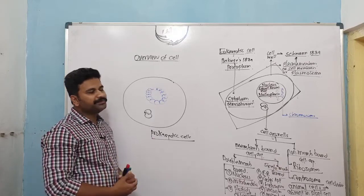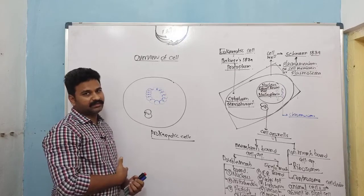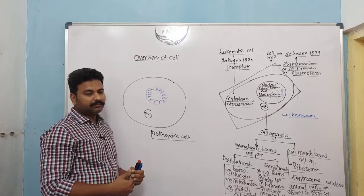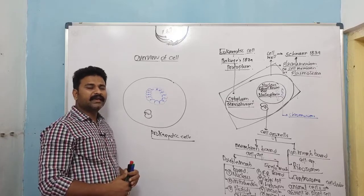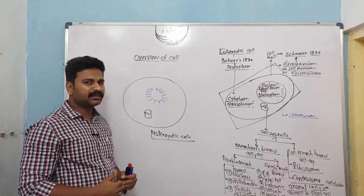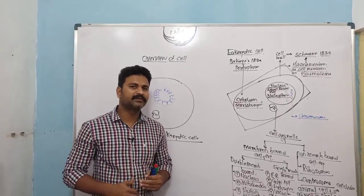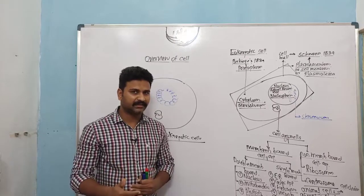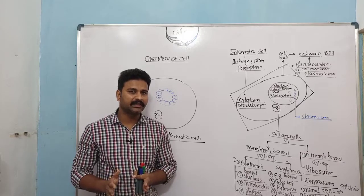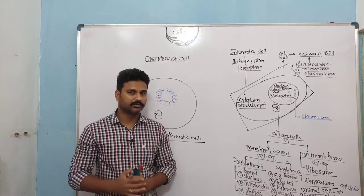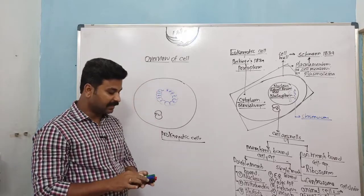Today we have seen the whole overview of what a eukaryotic cell and a prokaryotic cell involves, and how animal and plant cells differ. Students, NCERT assumes we know the difference between animal and plant cells, but we need to remember four important differences.